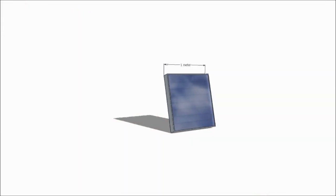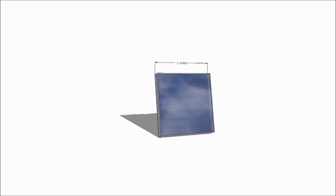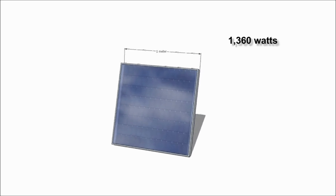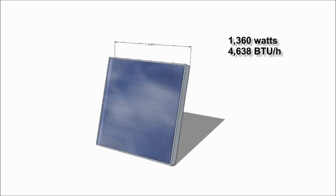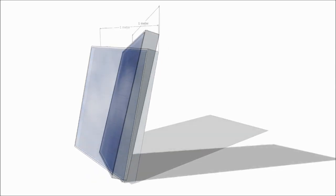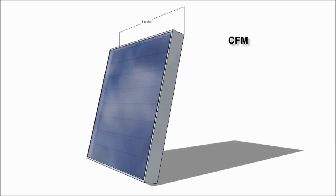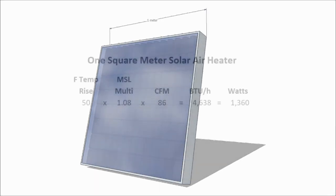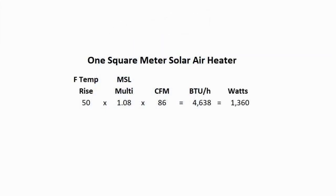Let's assume for a minute that my first solar air heater is exactly one meter square and 100% efficient — it isn't, but for the purpose of this discussion let's assume those dimensions and 100% efficiency. So I am capturing exactly 1,360 watts or 4,638 BTUs from the sun. When calculating BTUs or watts within a solar air heater there are really only two variables: air flow in cubic feet per minute and temperature differential, or temperature rise. My one meter square, 100% efficient solar air heater has a temperature rise of 50 degrees Fahrenheit while moving 86 cubic feet per minute of air, capturing 4,638 BTUs or 1,360 watts of solar energy.